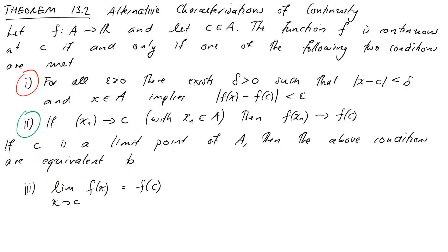The first part is literally just a restatement of our definition. The second one — recalling our sequence limit definition — required every sequence tending to the limit point to have its sequence of function values approaching the same point b. Here the characterization is very similar: if our sequence of x-values converges to c, then we require the sequence of function values to converge to f(c). So f(c) now appears in the statement rather than the value b, because we care about what's happening at the point c as well as what's happening nearby.